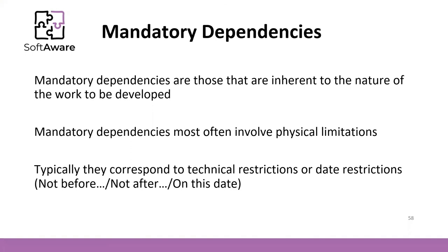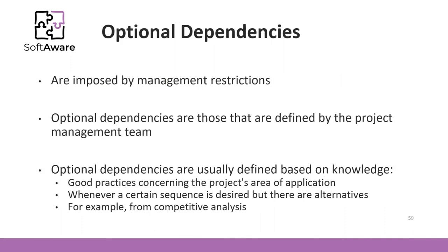You can consider two types of dependencies: mandatory and optional. Mandatory dependencies are those inherent to the nature of the work — it is physically impossible to break this kind of dependency. Optional dependencies, on the other hand, are decisions and options imposed by management restrictions. When you have optional dependencies, you can use those options and change them if you need to speed up the project. We will see that later.